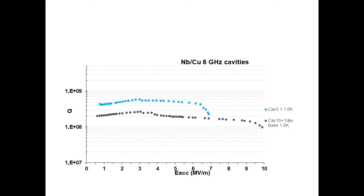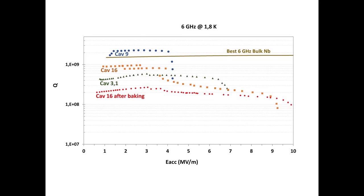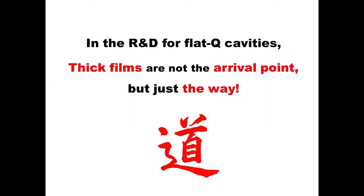The Q-slope can be modulated by varying the thickness of the single elementary layer. When the cavity is mechanically sound, without defects, perfectly electropolished, and all parameters optimized, flat Q curves are possible. In these slides we see the first encouraging results, and in the next graph we see that flat Q cavities are appearing more and more often.